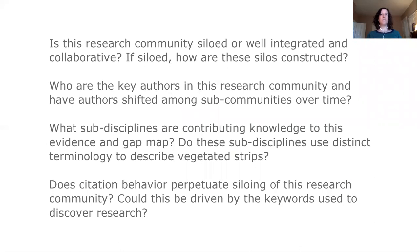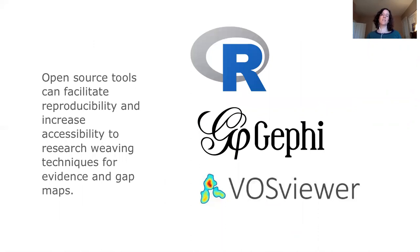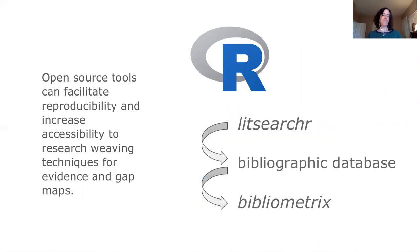There are a number of open source tools available to conduct network analysis and create network visualizations — Gephi and VOSviewer are two popular tools. Given the focus of this conference on R, I'll mention more specifically the bibliometrix package. Most of the visualizations in the previous slides were generated with bibliometrix. This package works with outputs from standard bibliographic databases like Scopus and Web of Science. You can also use functions in the LitSearcher package to build an exact title search from your list of evidence and gap map studies, run that search in the database, and export a file that can be analyzed in bibliometrix — a nice workflow implementable in R.